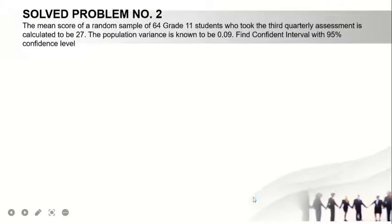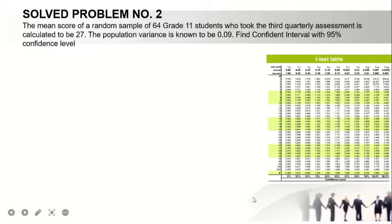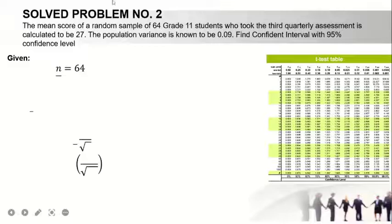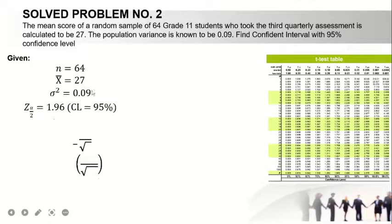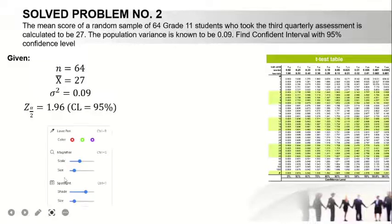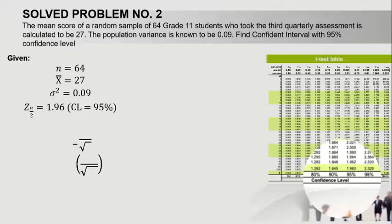We have solved problem number 2. The mean score of a random sample of 64 Grade 11 students who took the third quarterly assessment is calculated to be 27. The population variance is known to be 0.09. Find the confidence interval with 95% confidence level. This is your t table. Given: your sample is 64, your sample mean is 27, your variance is 0.09 - this will be tricky - and your z sub alpha over 2, or critical value, is equal to 1.96. Why 1.96? With the confidence level of 95%, let's find 95. There it is.